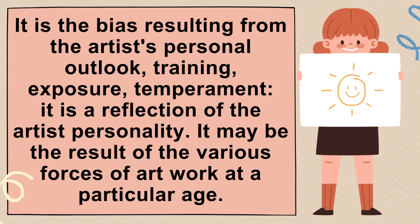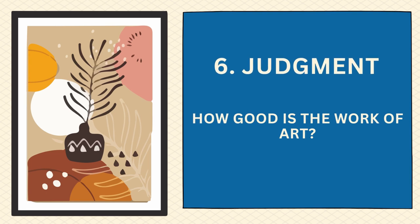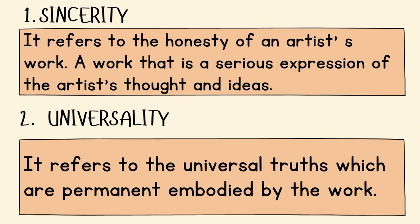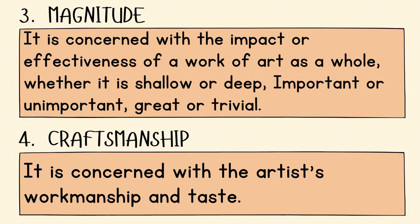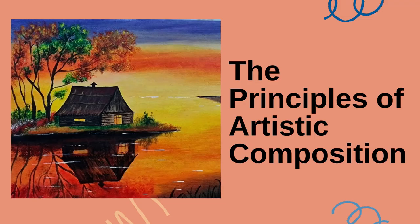The sixth principle of art is judgment. It answers: how good is the artwork? There are four overall criteria used in judging whether a work of art is great or not. First, sincerity — the honesty of the artist's work, a serious expression of the artist's thoughts and ideas. Second, universality — the universal truths which are permanently embodied by the work. Third, magnitude — the impact or effectiveness of the work as a whole, whether it is shallow or deep, important or trivial. Fourth, craftsmanship — concerned with the artist's workmanship and taste.